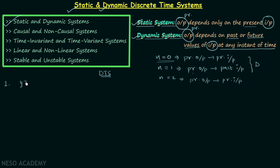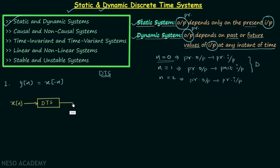In the first example we are having the output y[n] equal to x[-n]. We are having a discrete time system to which we are providing input x[n] and the output of the discrete time system is y[n]. In this particular case, y[n] equal to x[-n] means this particular system is performing the time reversal operation on the input and then providing it as the output. Now let's find out whether the given system is static or dynamic.